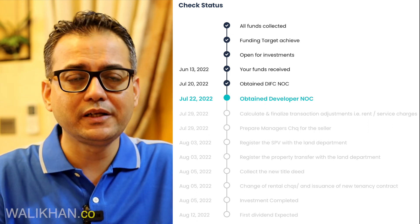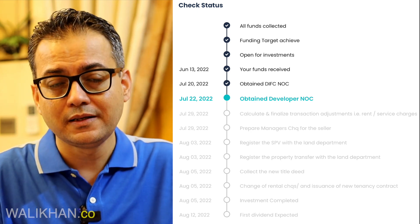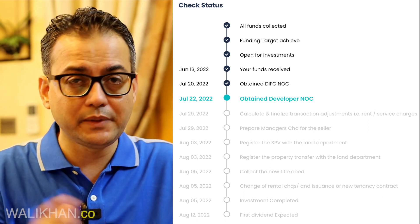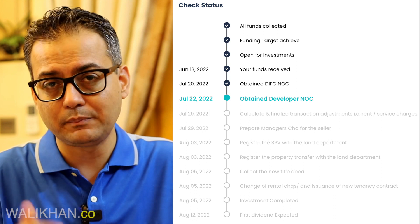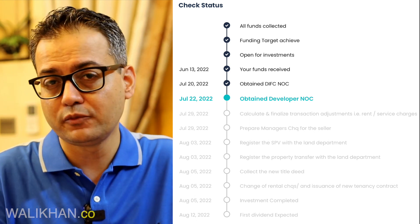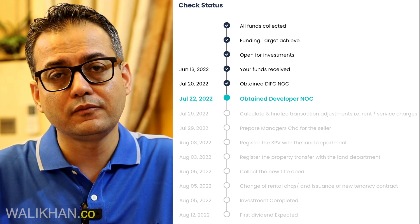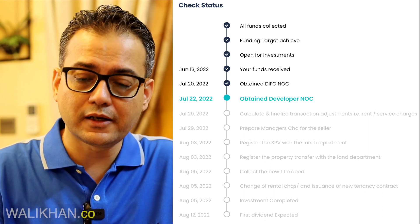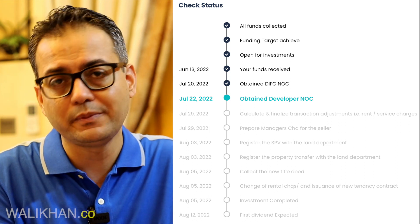If funds for a particular property are not collected within the given timeframe, then that property is forfeited. The property either comes back to the market or is removed. If it comes back, you can invest again. But the money you had invested will be returned fully to your wallet — you can either withdraw it to your bank account or reinvest it in another property.